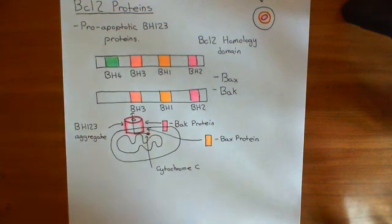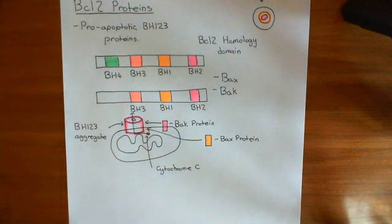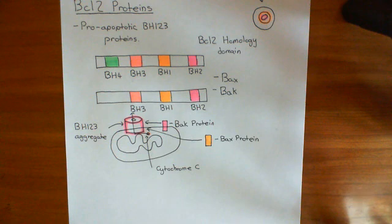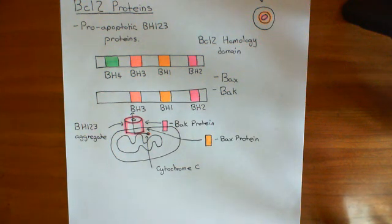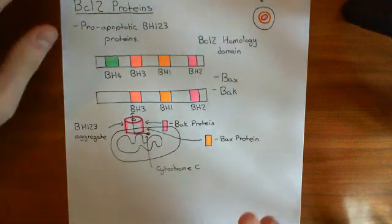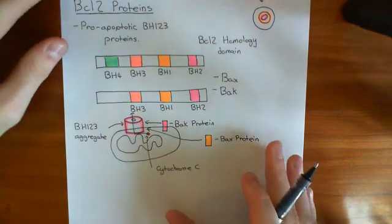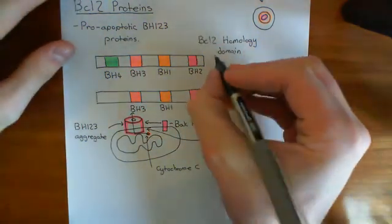These proteins are always working, trying to push the cell into committing suicide. So what is stopping this from happening? Because at the moment it would seem that every cell should be committing suicide, and that obviously is not happening. So there are proteins here to stop this from happening, and these are the anti-apoptotic BCL2 proteins.